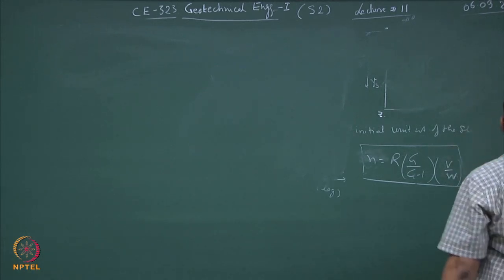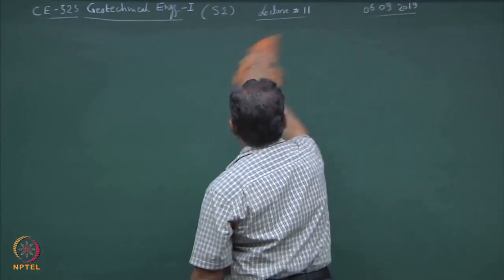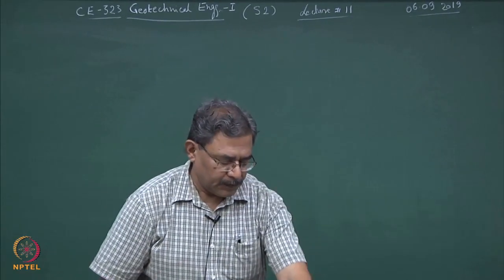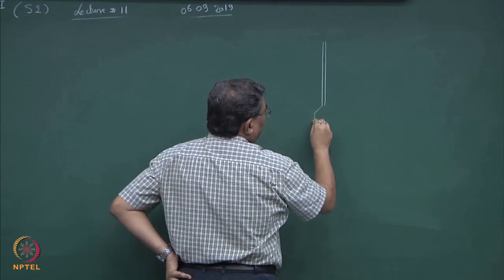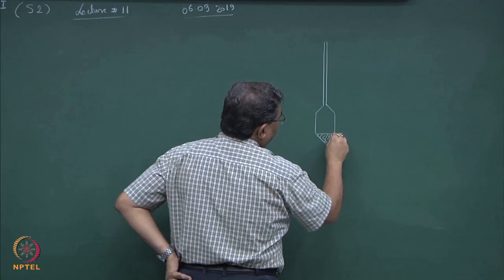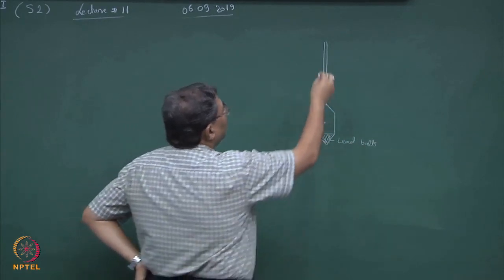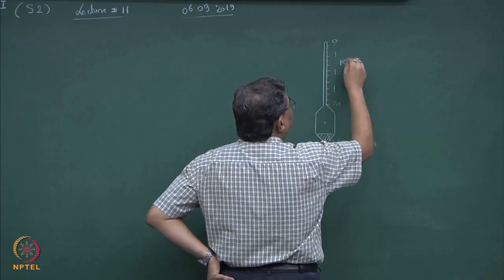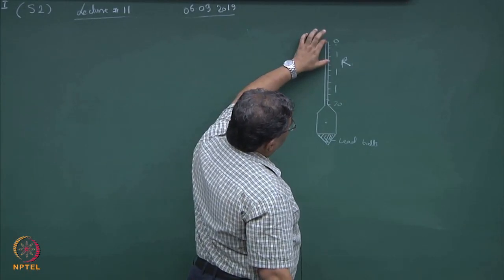Regarding the hydrometer reading — these are the graduations on the hydrometer stem. If you go to the lab next time and perform these experiments, you will observe that the hydrometer has a stem and a body. The bottom portion is filled up with lead balls. R is the graduation on the hydrometer — so 0 to 20 is the R value you read in real life.